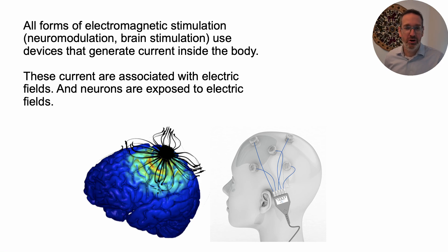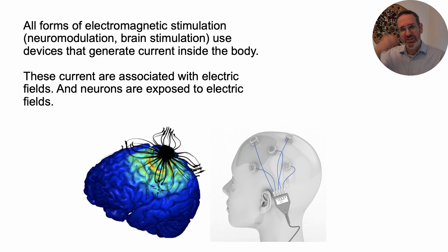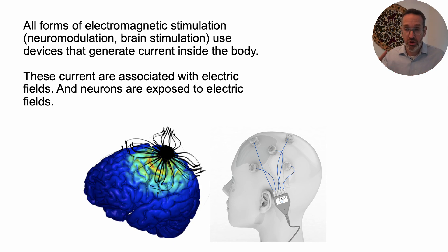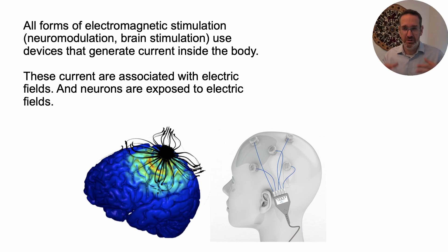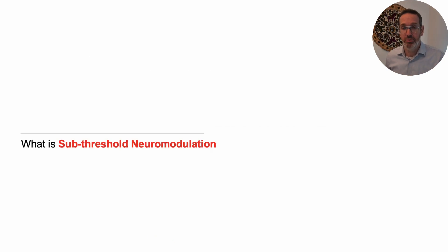All forms of what we call electromagnetic brain stimulation — usually just called brain stimulation or neuromodulation — work by delivering electricity into the body, whether via an electrode or a magnet. It has to work by generating electrical current flow through the body, and that current flow is associated with the generation of electric fields. You can think of current flow through the body and electric fields as interchangeable. The body is full of neurons, your nervous system, and so when you apply electrical stimulation, neurons are exposed to electric fields. That's the general background. We're going to talk about how electric fields or currents affect neurons, and this applies to all forms of brain stimulation.